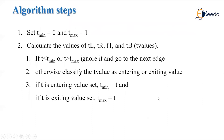Now let's see the algorithm steps. First, we set t_min to 0 and t_max to 1, since T always varies between 0 and 1. Then we calculate the value of T for the different boundaries of the window: TL (t_left), TR (t_right), t_top, and t_bottom. We apply three rules: if the value of T is between t_min and t_max, we ignore it and go to the next stage. Otherwise, we classify the T values as entering or exiting. If T is an entering value we set it as t_min; if exiting, we set it as t_max.